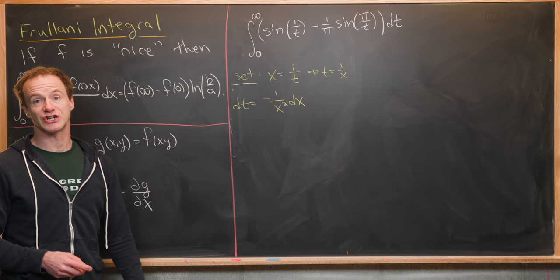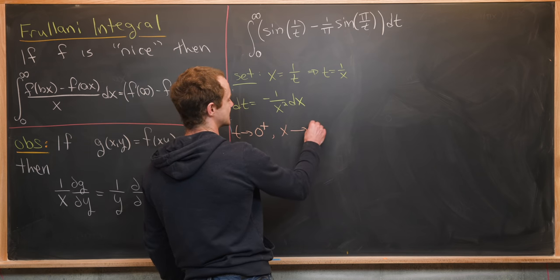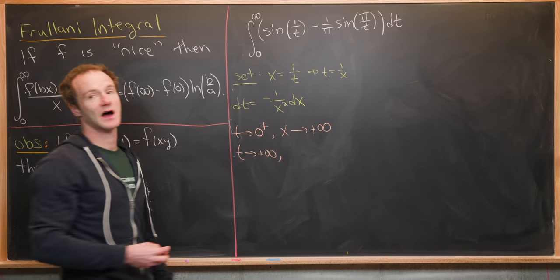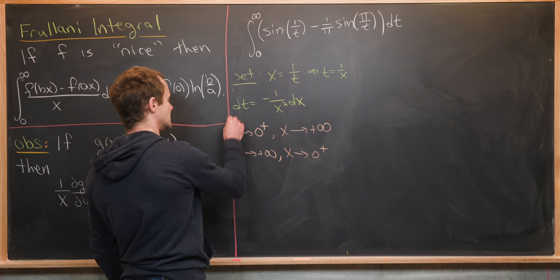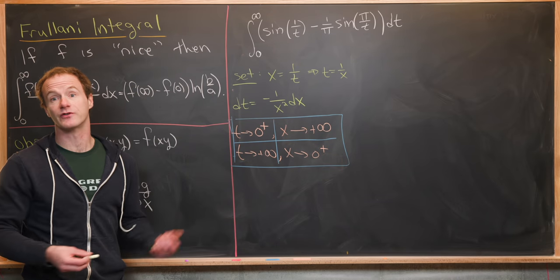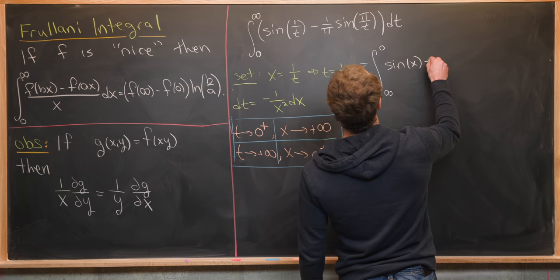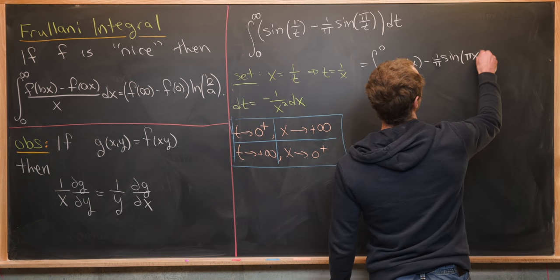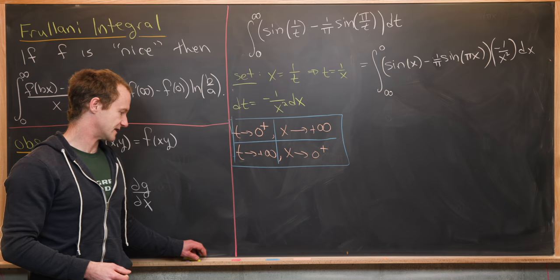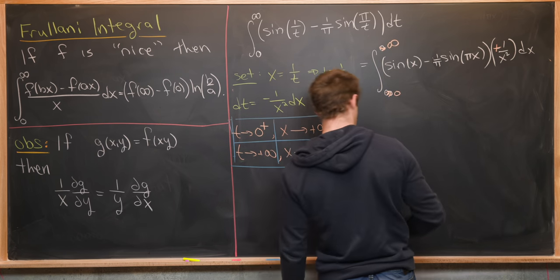We also need to update the bounds of integration. As t approaches 0 from above (the lower bound), x approaches positive infinity. As t approaches positive infinity (the upper bound), x approaches 0 from above. So the bounds are simply flipped. We take the minus sign from dt, change it to a plus sign, and reverse the bounds so the integral goes from 0 to infinity.